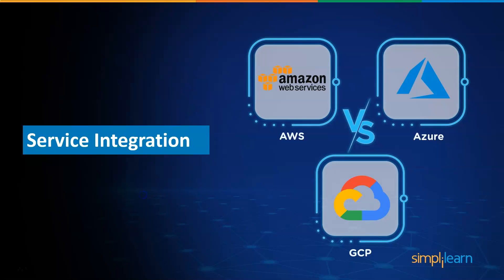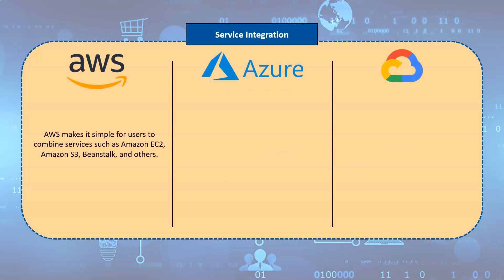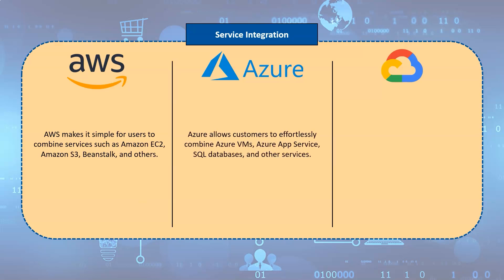Service integration is a set of tools and technology that connects different applications, systems, repositories, and data, enabling process interchange in real time. AWS makes it simple for users to combine services such as Amazon EC2, Amazon S3, Beanstalk, and others. Azure allows customers to effortlessly combine Azure VMs, Azure App Service, SQL databases, and other services, whereas users can utilize GCP to combine services such as Compute Engine, Cloud Storage, and Cloud SQL.